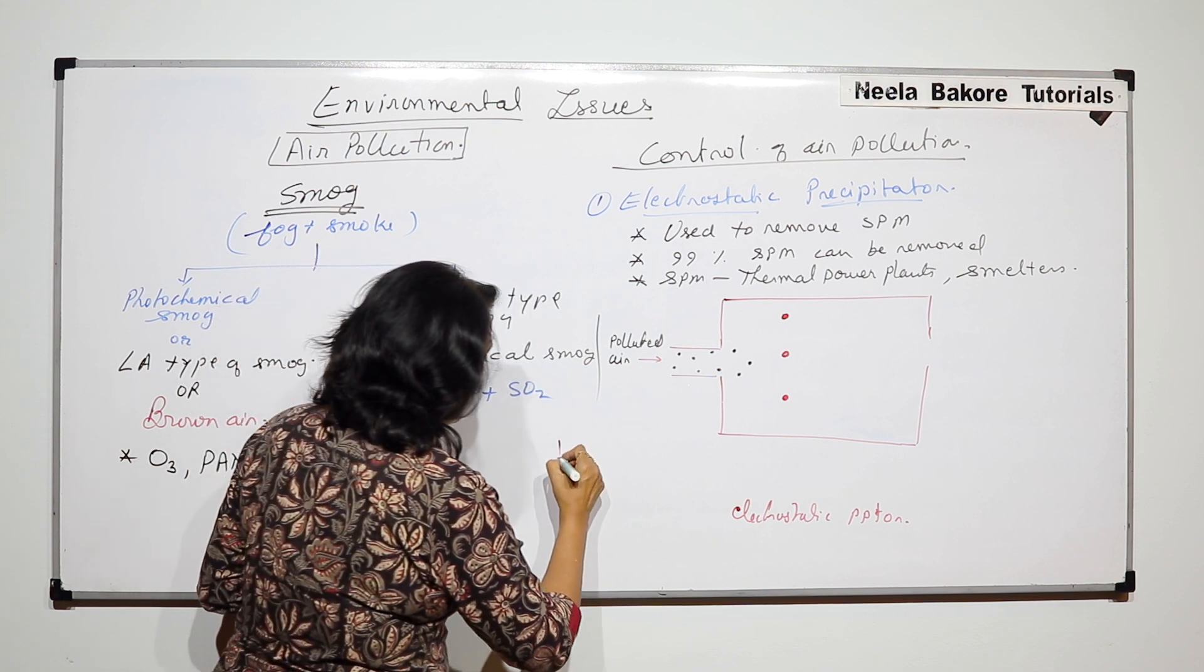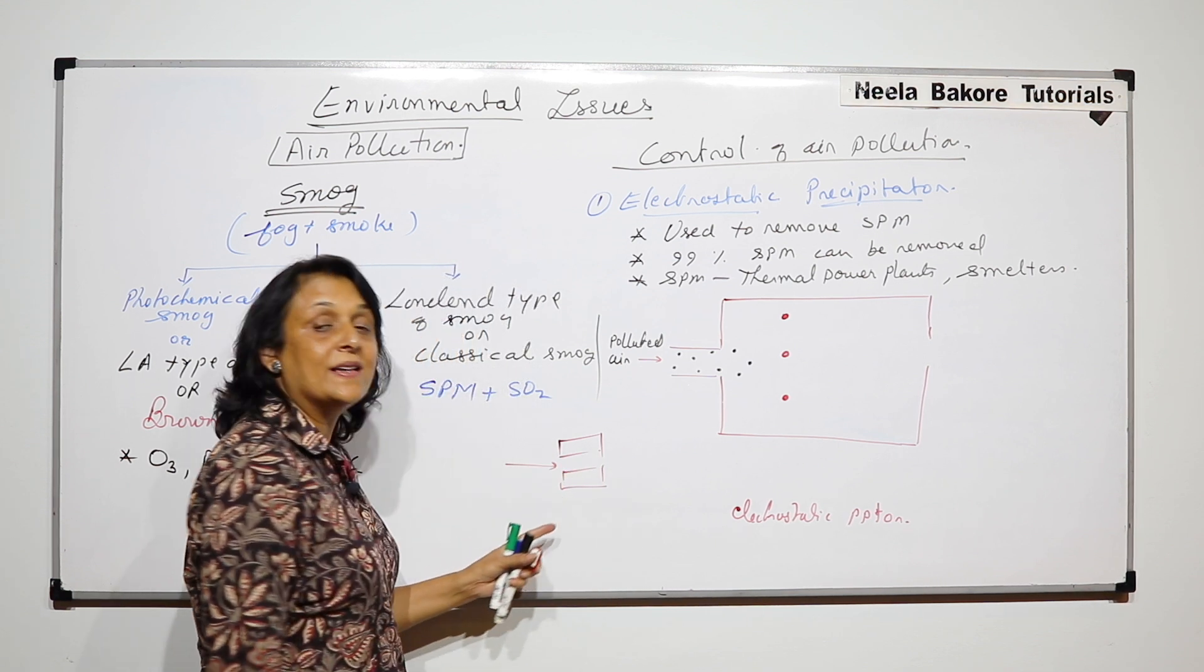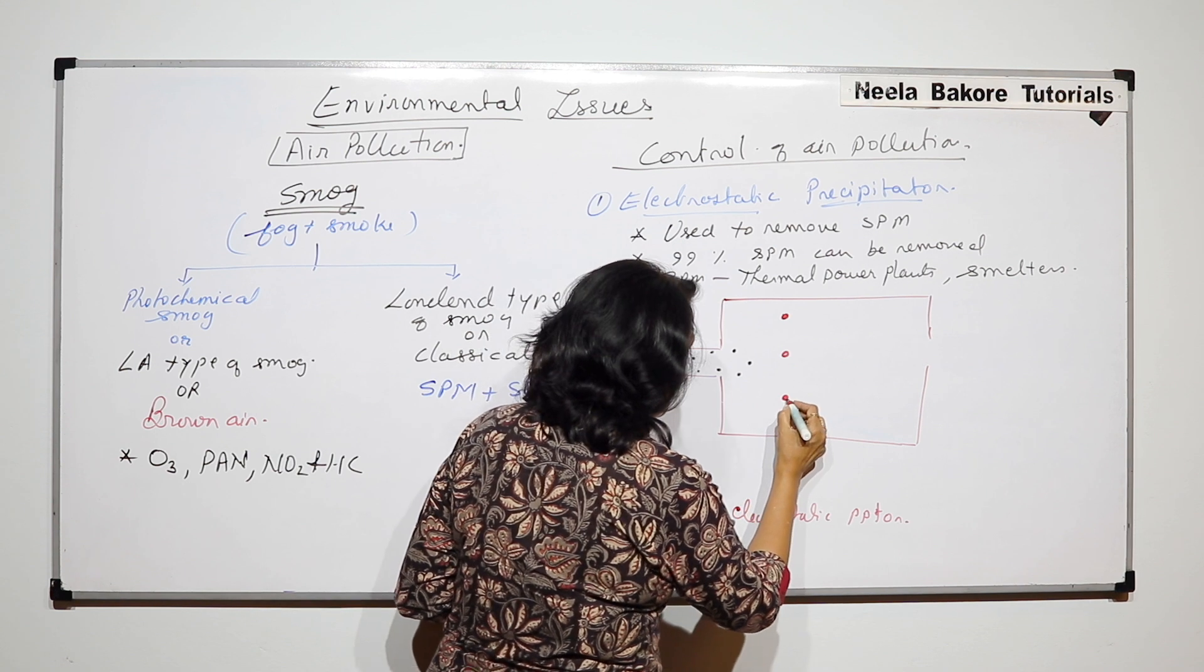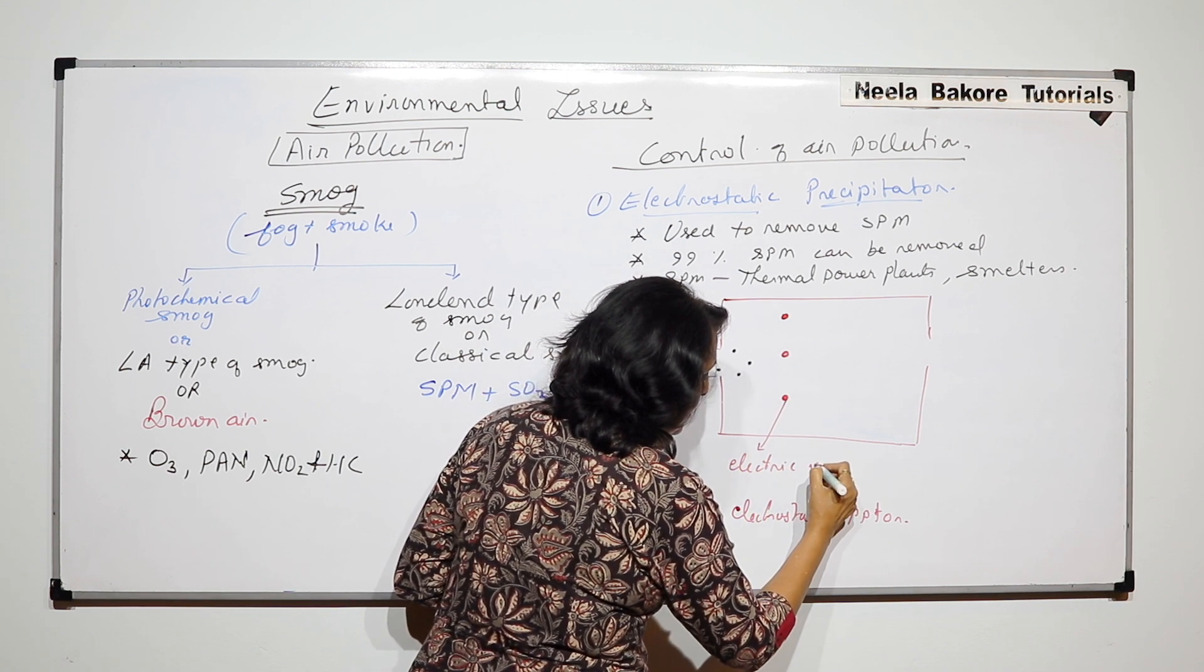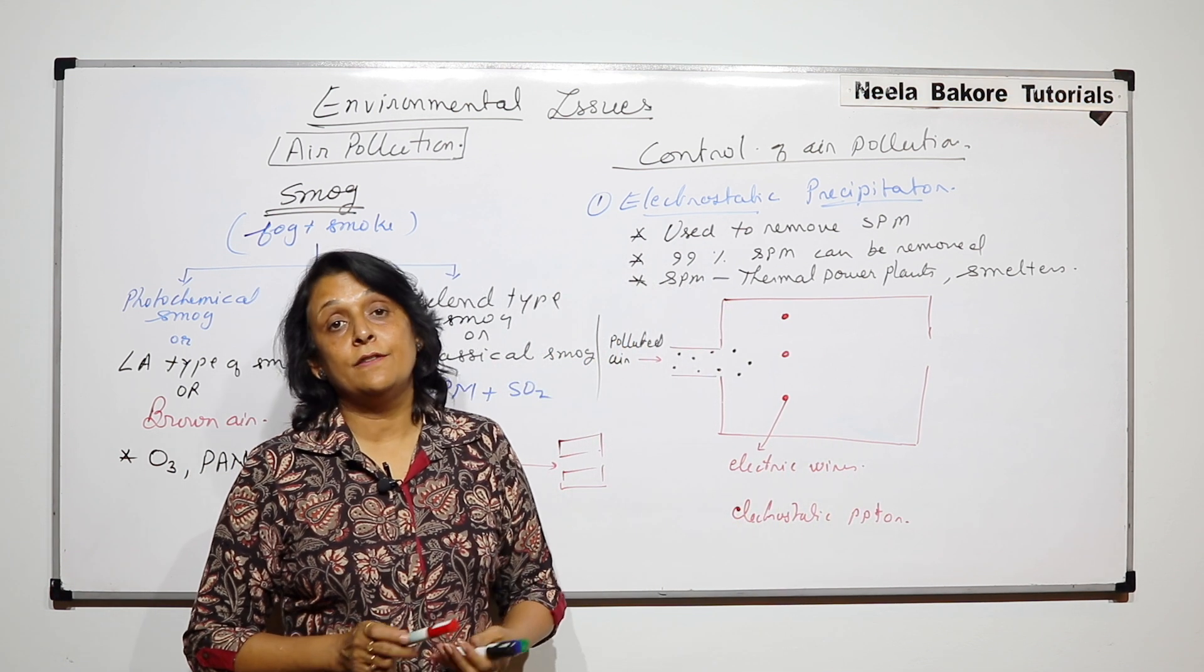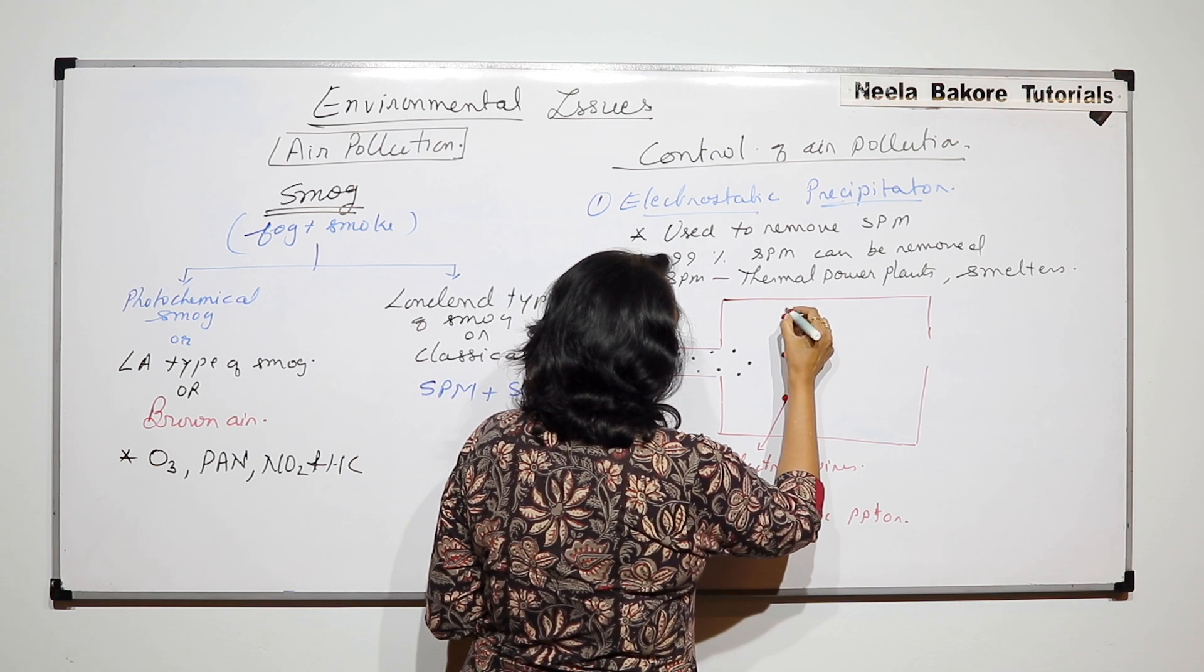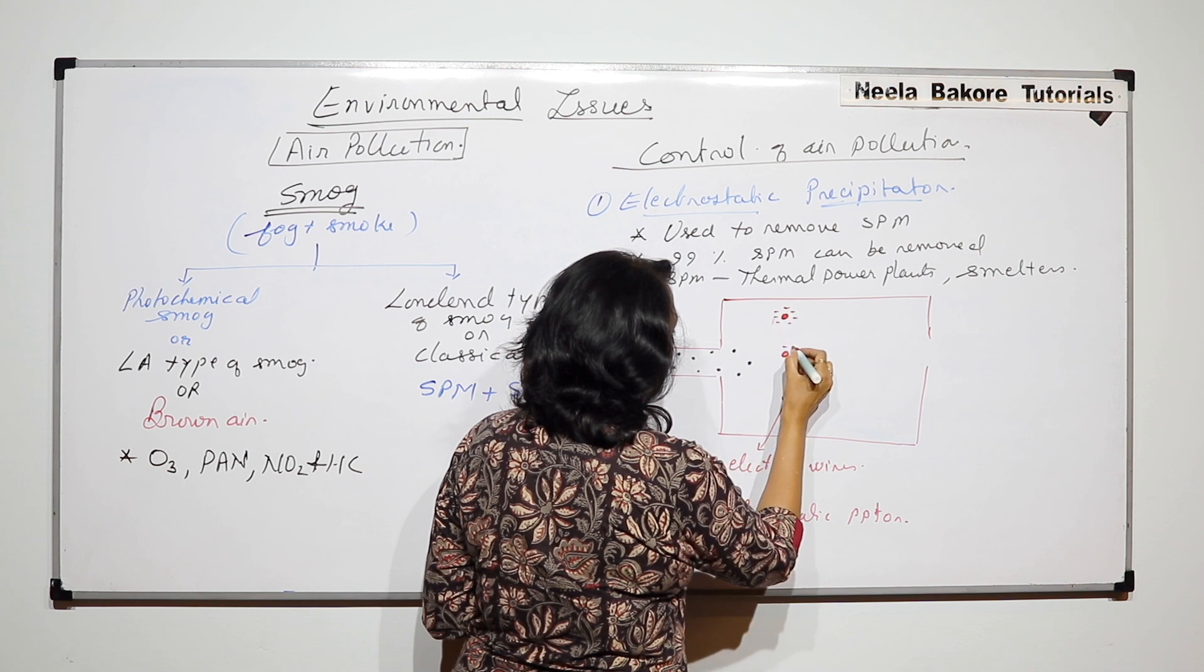Or they can be plates also. So it can be in the form of these plates. Suppose this is one plate, another plate, and the air passes between these plates. So these are the electric wires which generate a negative charge. Actually they release electrons in the form of a corona. So here we would find a corona and that corona is of electrons.